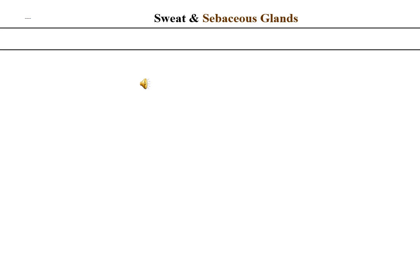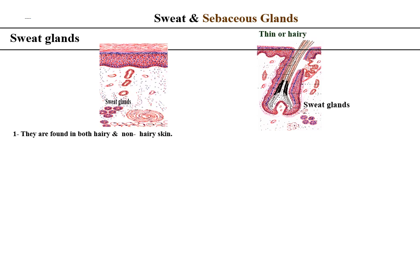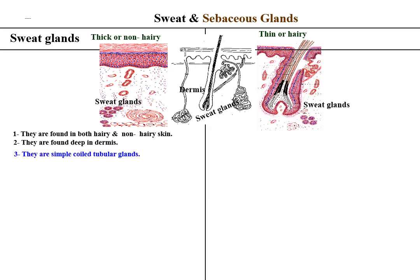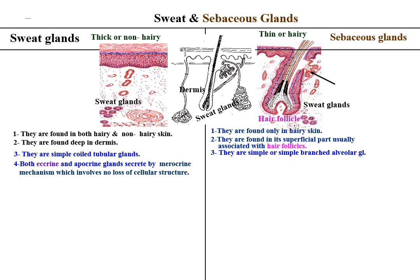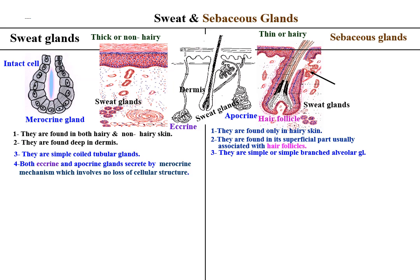Comparison between sweat and sebaceous glands: Sweat glands are found in both hairy and non-hairy skin, found deep in the dermis, and are simple coiled tubular glands. While sebaceous glands are found only in hairy skin, found in the superficial part of the dermis, usually associated with hair follicles, and are simple or simple branched alveolar glands. Both eccrine and apocrine sweat glands secrete by merocrine mechanism, which involves no loss of cellular structure.